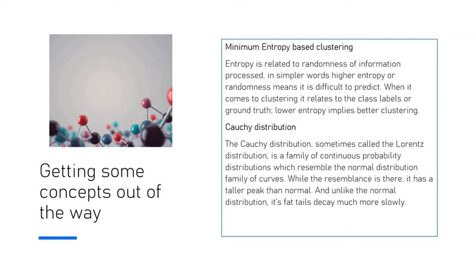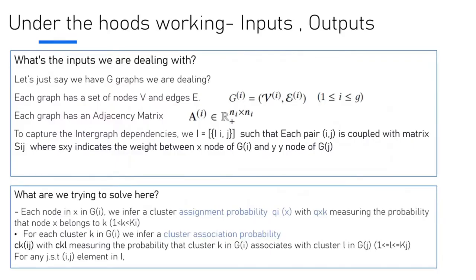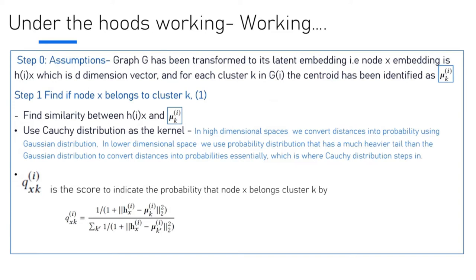In the paper, we try to solve two things. One is cluster assignment probability, which means that for node X in G of I to belong to cluster K, there has to be a cluster assignment probability Q_I(X), with Q_X measuring the probability that node X belongs to K. Once we've done cluster assignment probability, we try to arrive at cluster association probability saying that cluster K in G_I is associated with cluster L in G_J, with C_KL measuring the probability of cluster K associating with cluster L.